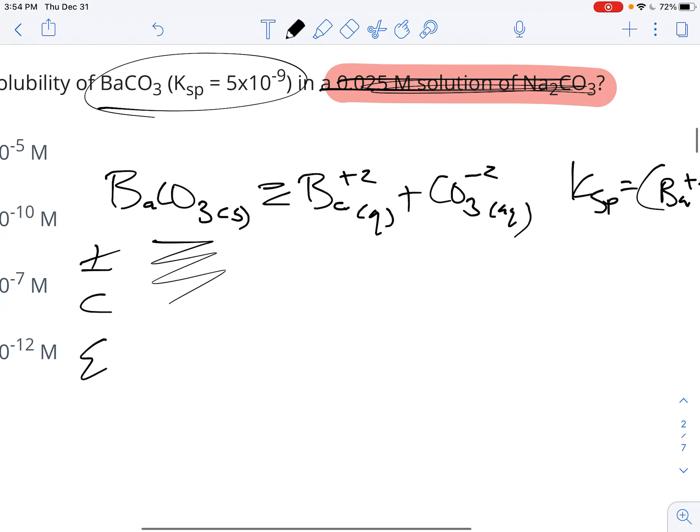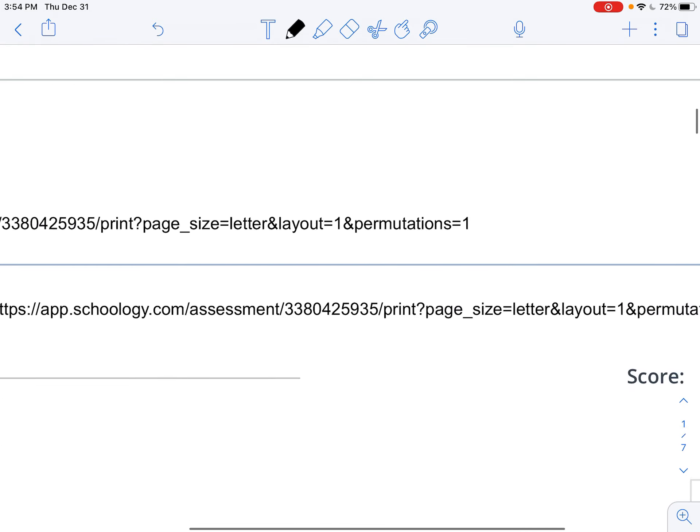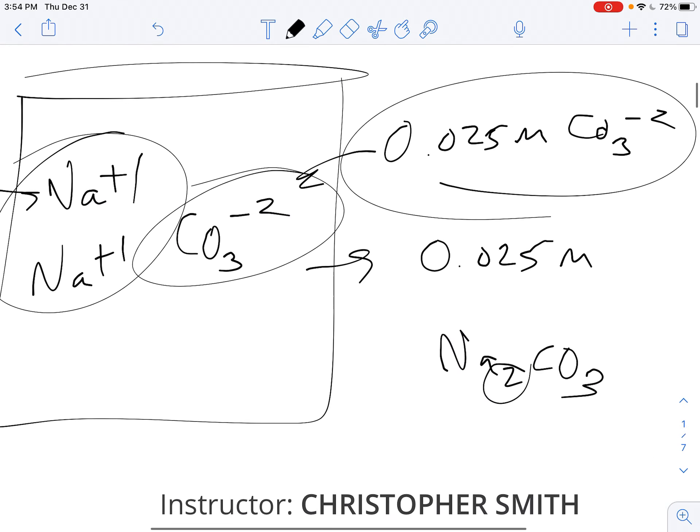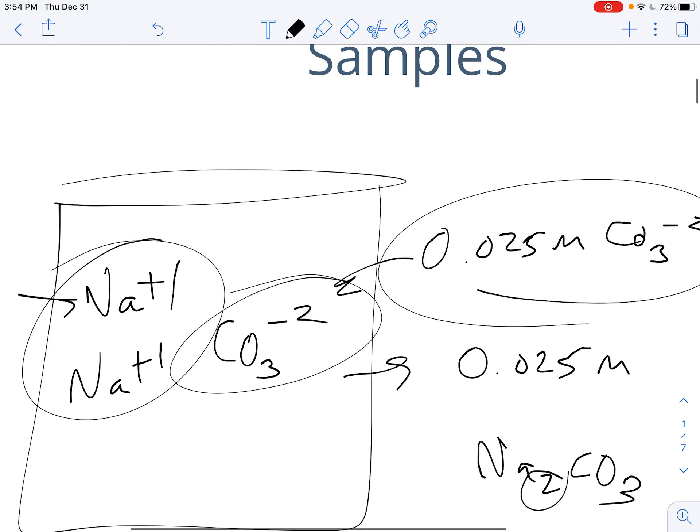We've got an I and a C and an E. Notice how every one of these problems is done identically. What does this have to do with our setup up here? Well, what we're doing is we're trying to put barium carbonate into a system that already has the carbonate.